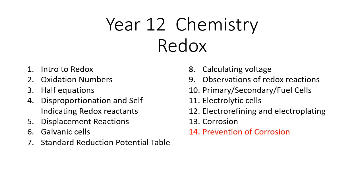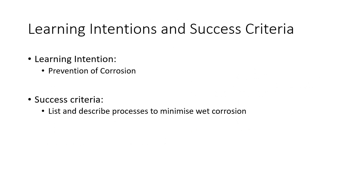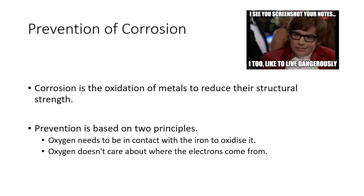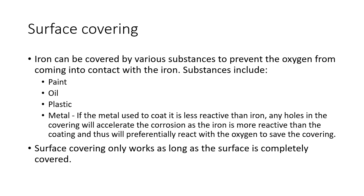Okay Year 12, this is the final video on redox — it's about prevention of corrosion. Corrosion is the oxidation of metal to reduce its structural strength. Prevention is based on two principles: number one, oxygen needs to be in contact with the iron to oxidize it, and number two, oxygen doesn't care where the electrons come from, so you can make them come from somewhere else.